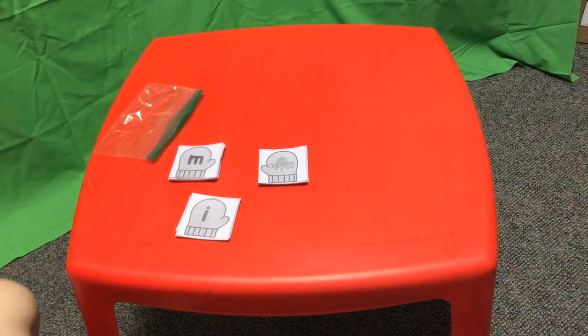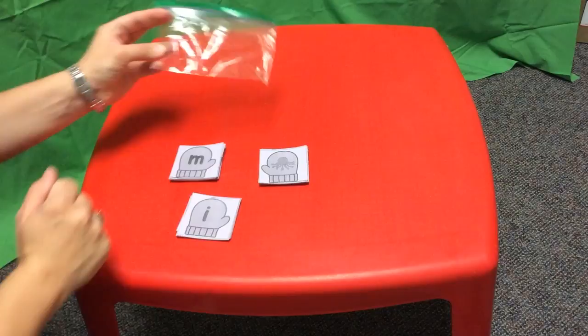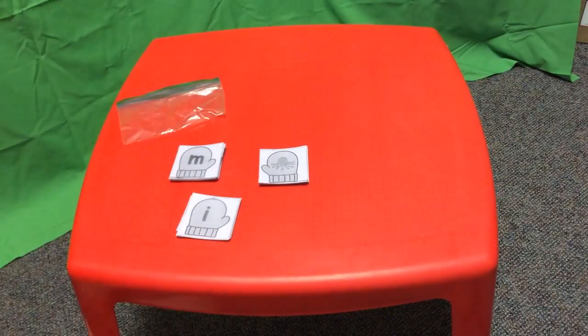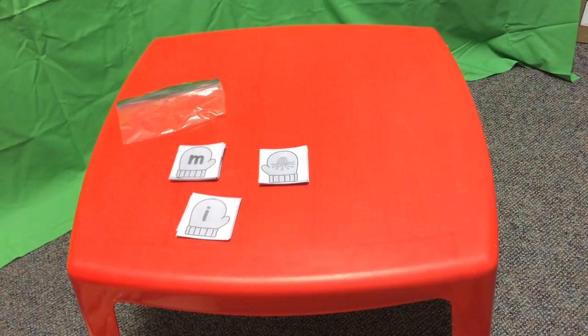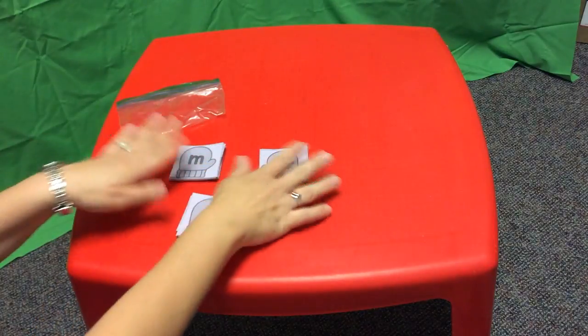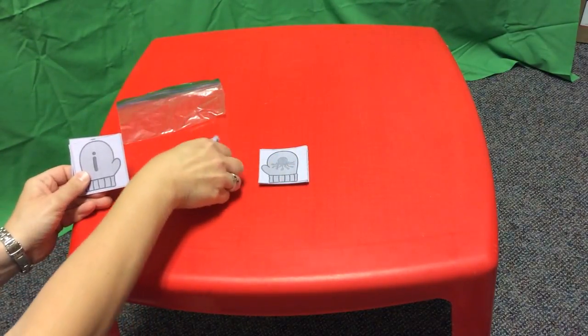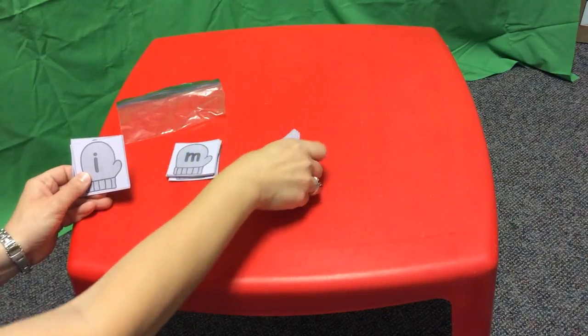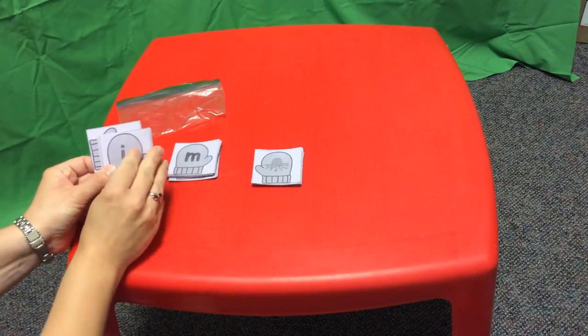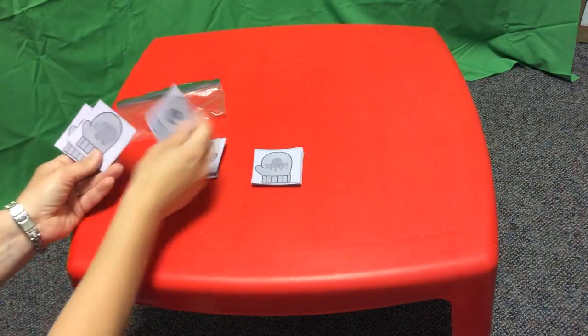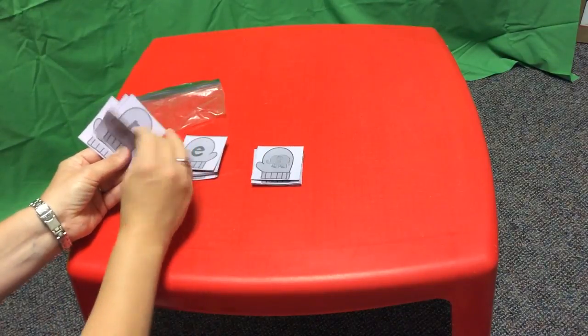All right friends, you have a little bag and inside of it has some cards with mittens on them. Your job is to take them out. I already started, I took them out and had a pile, and I've sorted them into letters and pictures. You need to sort them into piles of letters and pictures just like this: letters and pictures.